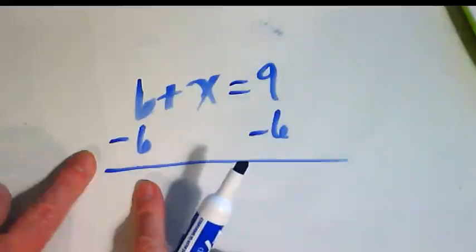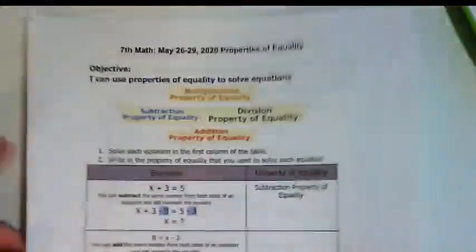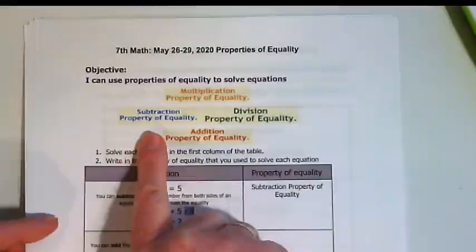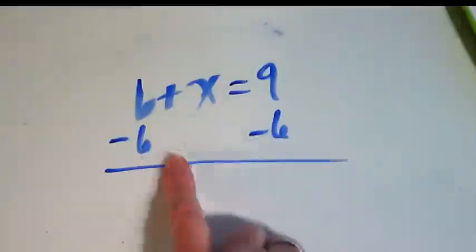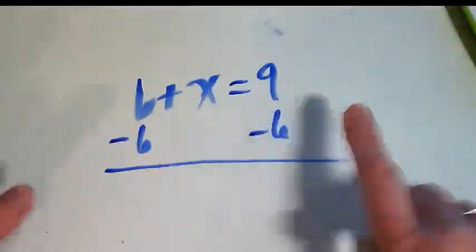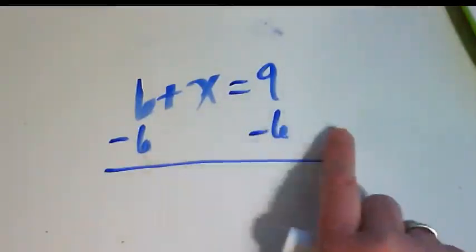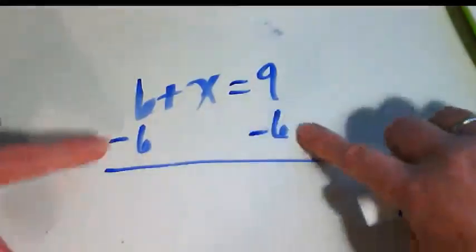This is subtraction. So when I look at this list here, it is the subtraction property of equality, because I'm using subtraction on both sides of my equation. So I'm using subtraction equally.